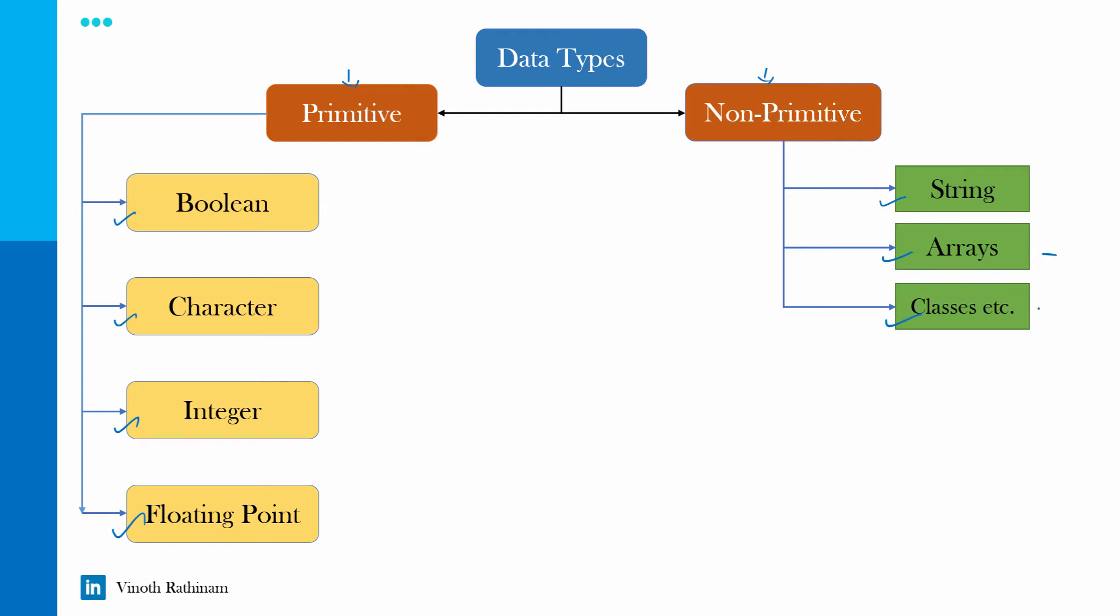This array and classes we will learn later and we already learnt about string data type that is to declare the string value within the double quotes. So from the non-primitive data type we will learn about string only. Let's move on to the primitive data type.